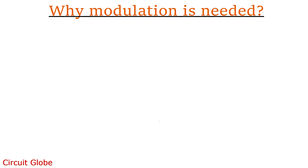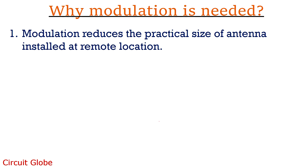Let's first see why modulation is required. The first point is, modulation reduces the practical size of the antenna which is present at the remote location. For the transmission of a radio frequency signal, the height of the antenna must be a multiple of lambda by 4. We know lambda is given as C by F, where C represents the speed of light and F represents the frequency of the signal. So whenever the frequency of the signal is increased, the wavelength will automatically decrease, and this ultimately decreases the value of lambda by 4. In this way, the practical size of the antenna can be reduced by the process of modulation.